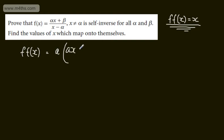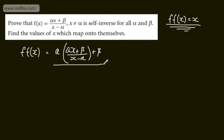So there's our alpha x plus beta over x minus alpha, and then we're going to have plus beta. That is the numerator. In the denominator, we've got x, which becomes alpha x plus beta over x minus alpha, and then we have minus alpha.